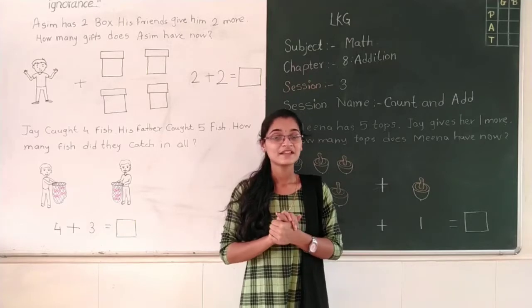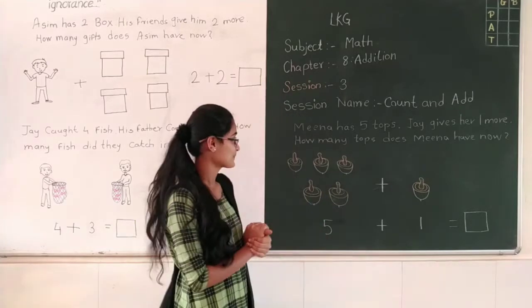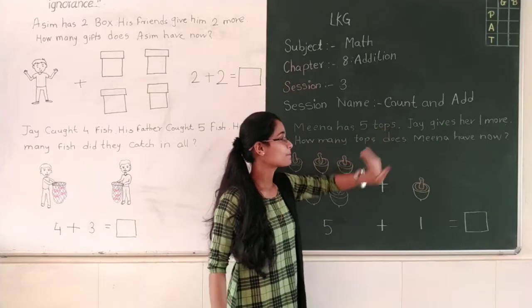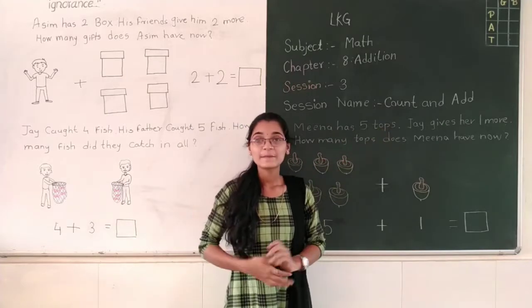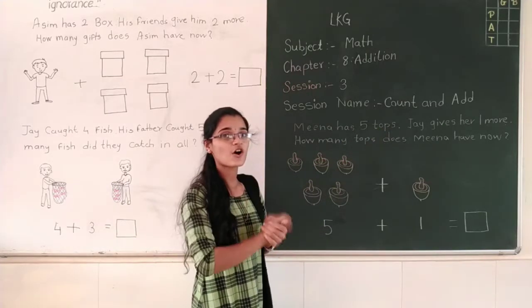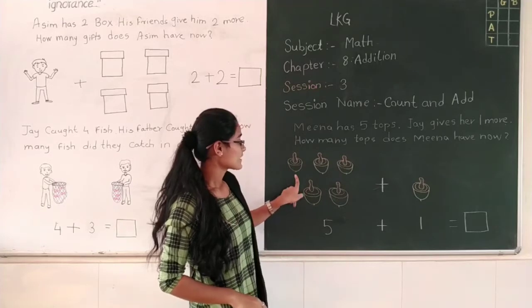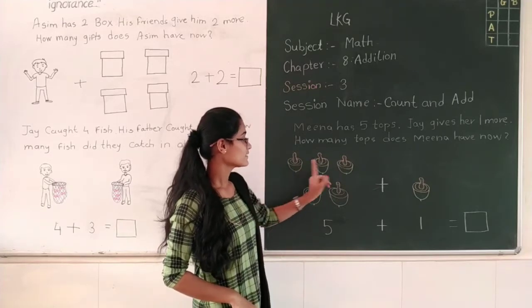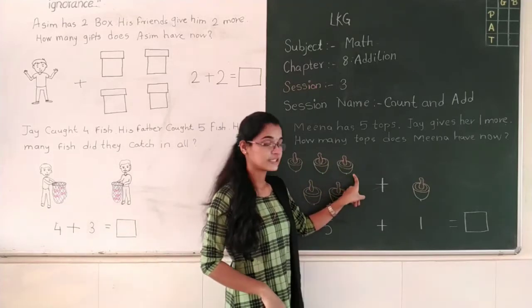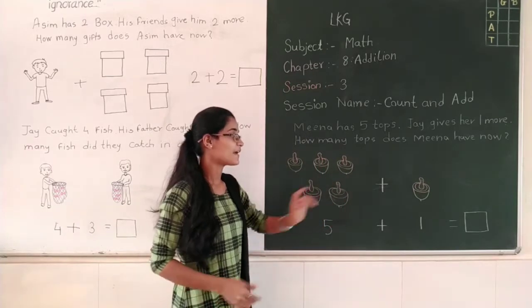So let's start. Now students, look at here. Meena has 5 tops. Meena has how many tops? 5 tops. Look at here. Count: 1, 2, 3, 4 and 5.